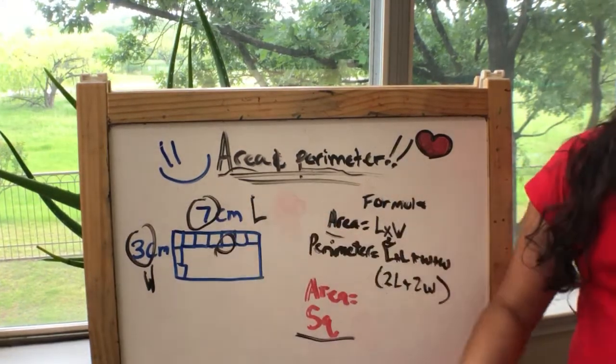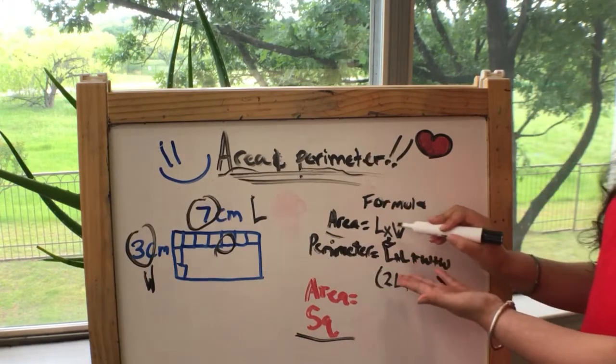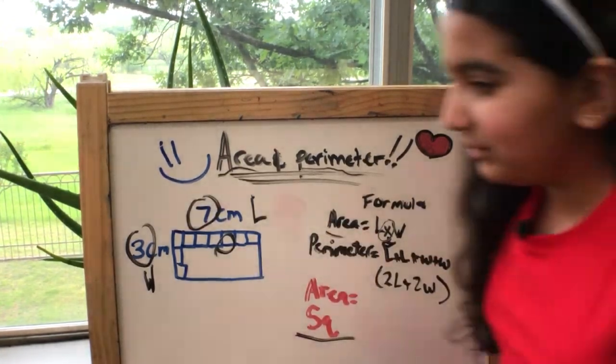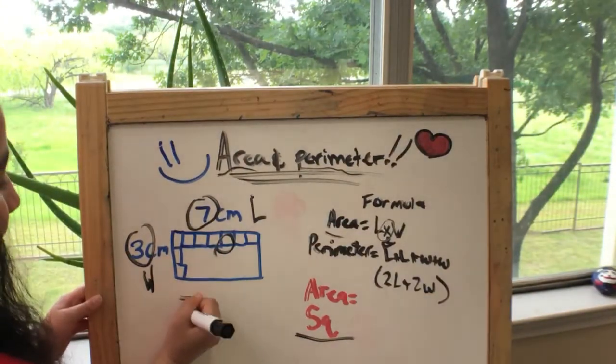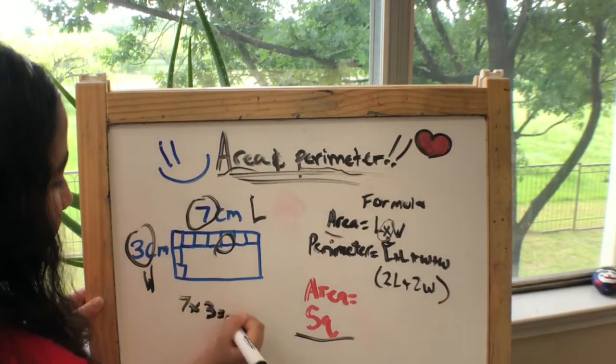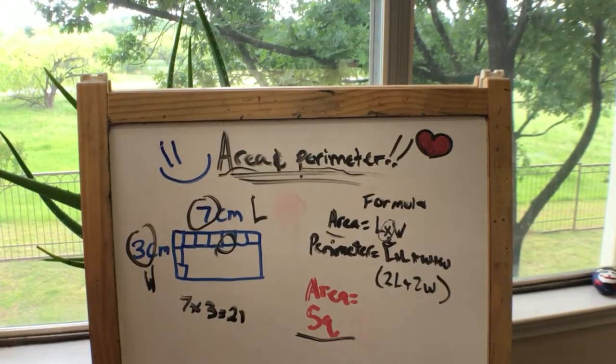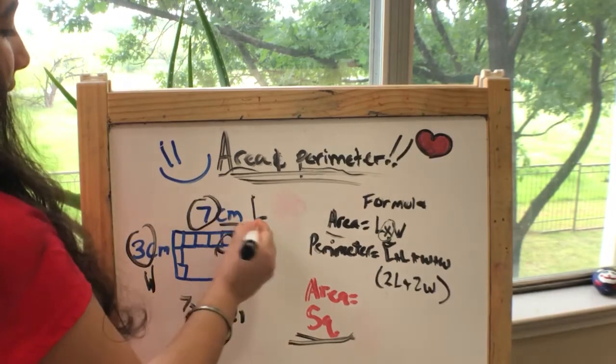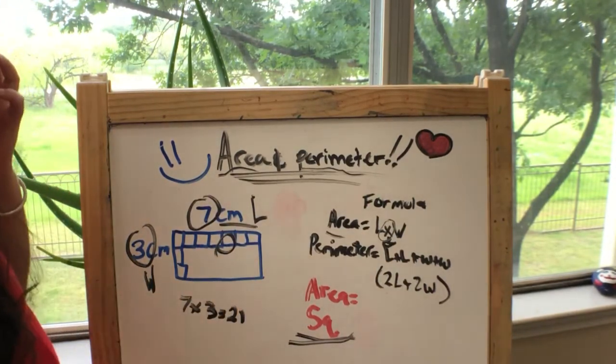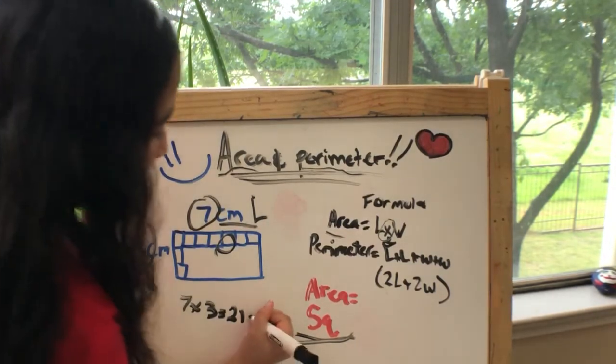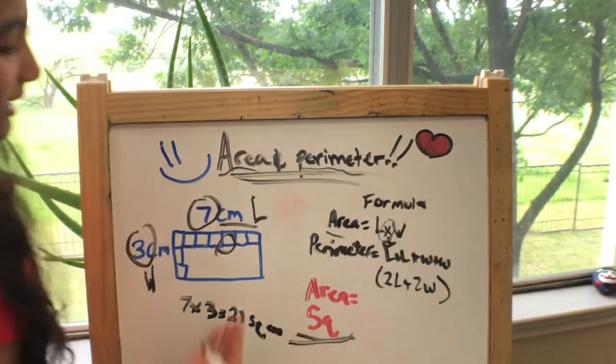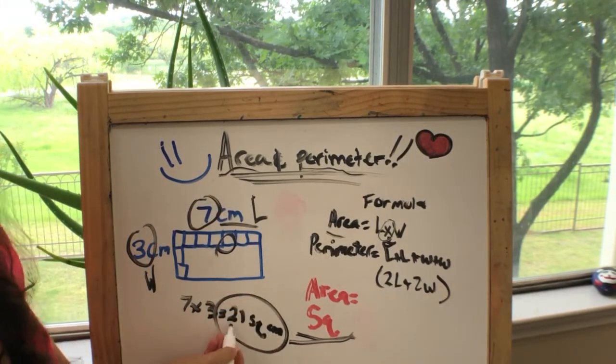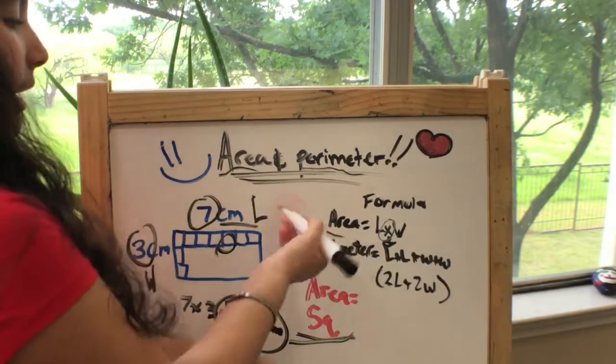Now if we look at the formula, it says to multiply. So we're going to multiply seven times three. Seven times three equals 21. We have 21, but before we move on, like I said, square units centimeters. So there we go, now we have our answer. Our answer is 21 for area.